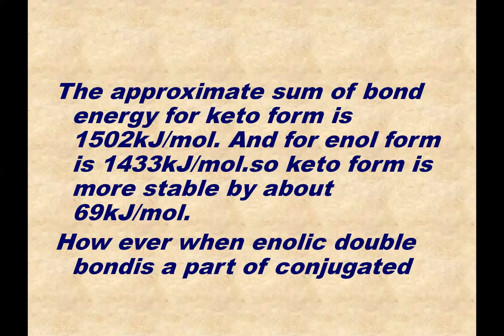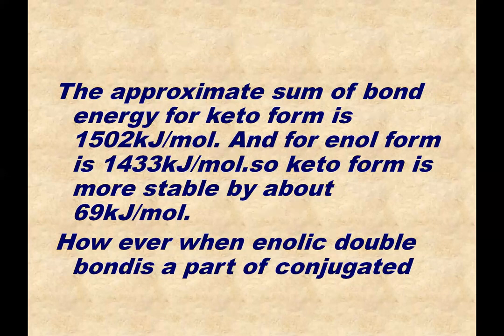The approximate sum of bond energies for the keto form is 1502 kJ/mol — the energy required to break these bonds when keto form is converted into enol form. For the enol form, the sum is 1433 kJ/mol. Since more energy is required to convert the keto form, the keto form is more stable than the enol form. The energy difference is 69 kJ/mol, meaning keto form is more stable than enol form by 69 kJ/mol.